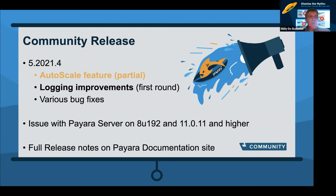The release last week contains something we're quite proud of — it's only a partial implementation, but it's the first realization of what we call the auto scale feature. Those who have followed Steve's roadmap webinars probably know what it is, but I'll show the idea again and demo what's already available. It will likely take another three or four releases until it's fully realized, as it's a very big feature with a lot of moving parts.